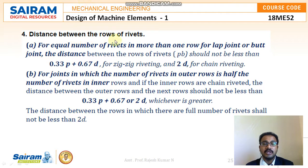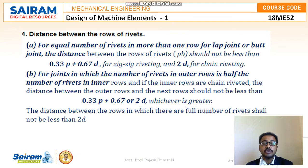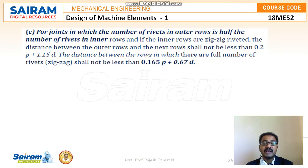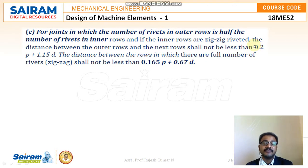The fourth step is the distance between the rows of rivets. For an equal number of rivets in more than one row for lap or butt joints, the distance between rows PV should not be less than 0.33P + 0.67D for zigzag riveting, and 2D for chain riveting. For joints where the number of rivets in outer rows is half the number in inner rows, and if inner rows are chain riveted, the distance between the outer row and the next row should not be less than 0.33P + 0.67D, or 2D, whichever is greater. All these formulas are available in the design data handbook.